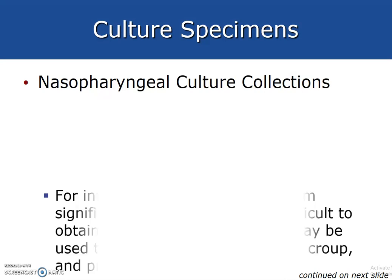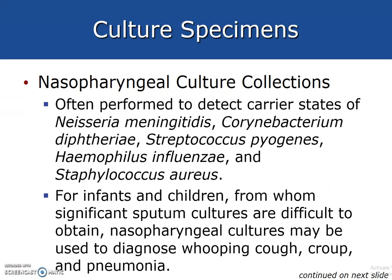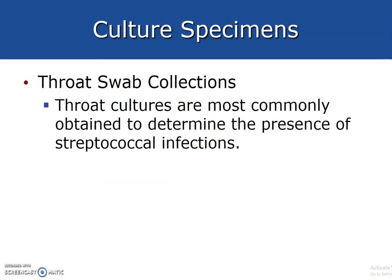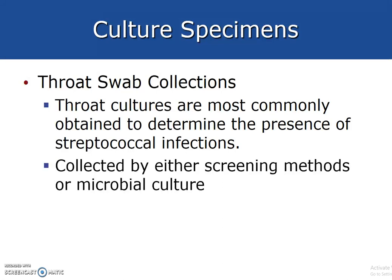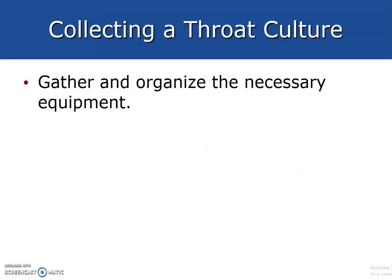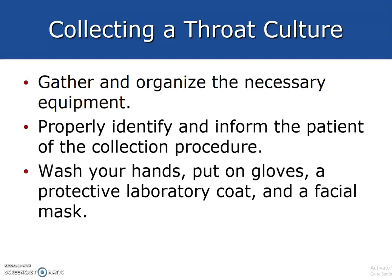Nasopharyngeal culture collections are often used to detect carrier states of bacterial meningitis, Corynebacterium, Streptococcus pyogenes, H. influenzae, and Staph aureus. For infants and children from whom significant sputum cultures are difficult to obtain, a nasopharyngeal culture may be used to diagnose whooping cough, croup, and pneumonia. Throat cultures are most commonly obtained to determine the presence of streptococcal infections, collected by either screening methods or microbiological cultures.